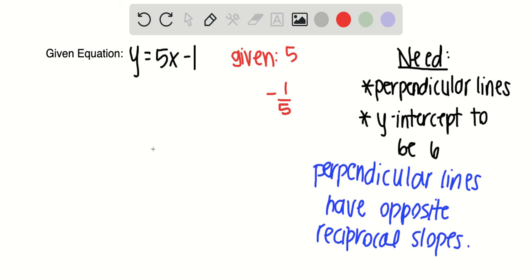So for this to be a perpendicular line, my slope will need to be -1/5x, and then my y-intercept will be positive 6, so plus 6.